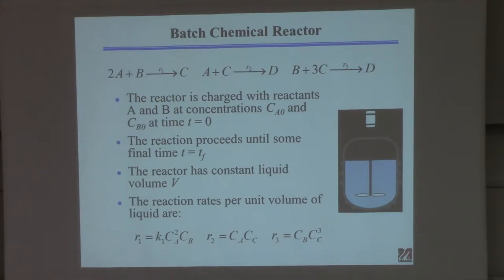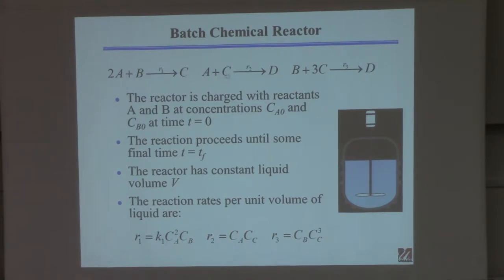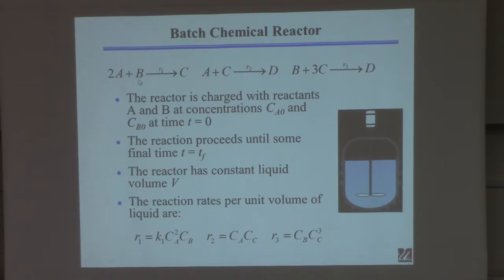This is a batch reactor. Here are the reactions we're going to perform: two reactants A and B form product C, then C can further react with A to make D, and B and C can react to make D. You wouldn't do this in a flask — a flask is too small and doesn't have a controllable environment. If you want to do this on a large scale, you do it in a big reactor that might be 10,000 gallons.